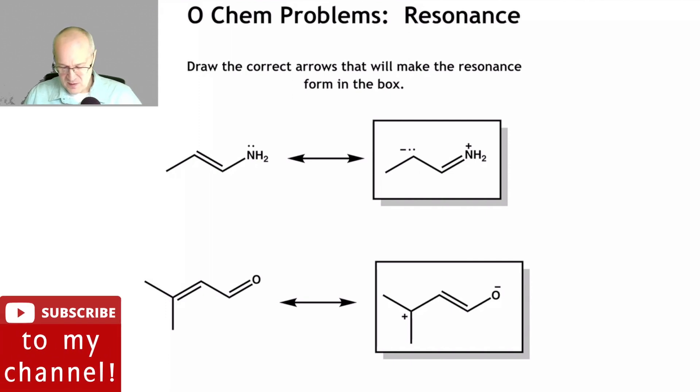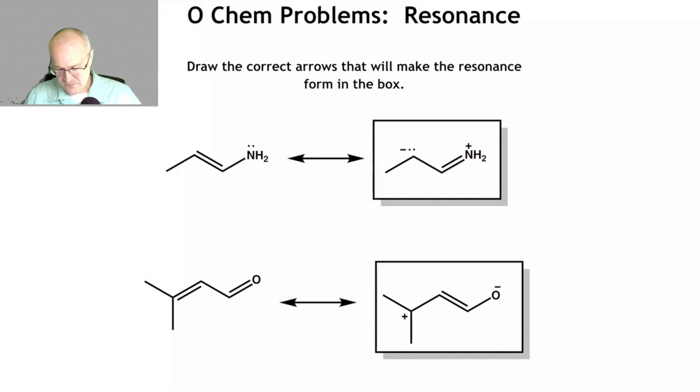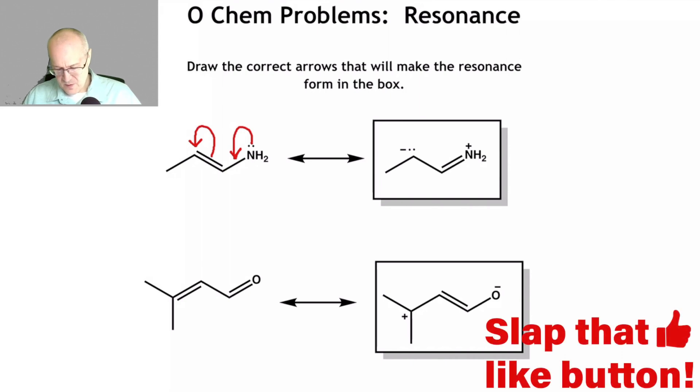So in order to move this lone pair between here and here to make a pi bond and put this pi bond here, which is what we see here, we have to do the following. There we go. Where the lone pair is kicking into here to form a pi bond between the nitrogen and carbon.